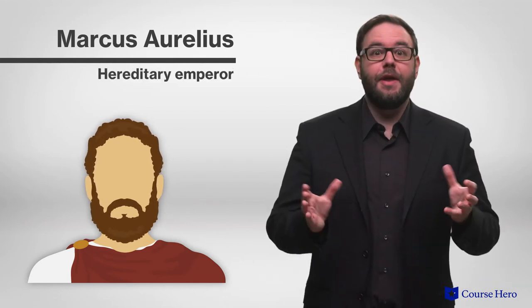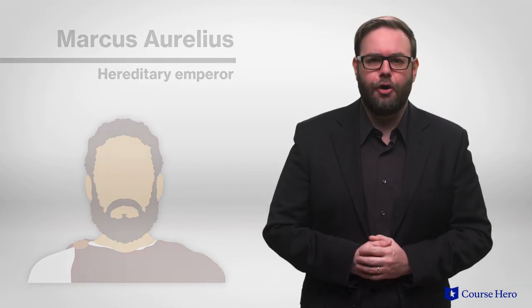Machiavelli notes that Marcus was a hereditary emperor. Hereditary principalities are easier to maintain so long as a prince keeps things going as they had been in the time of his predecessor. Marcus ruled easily because his situation did not require him to exert himself much.